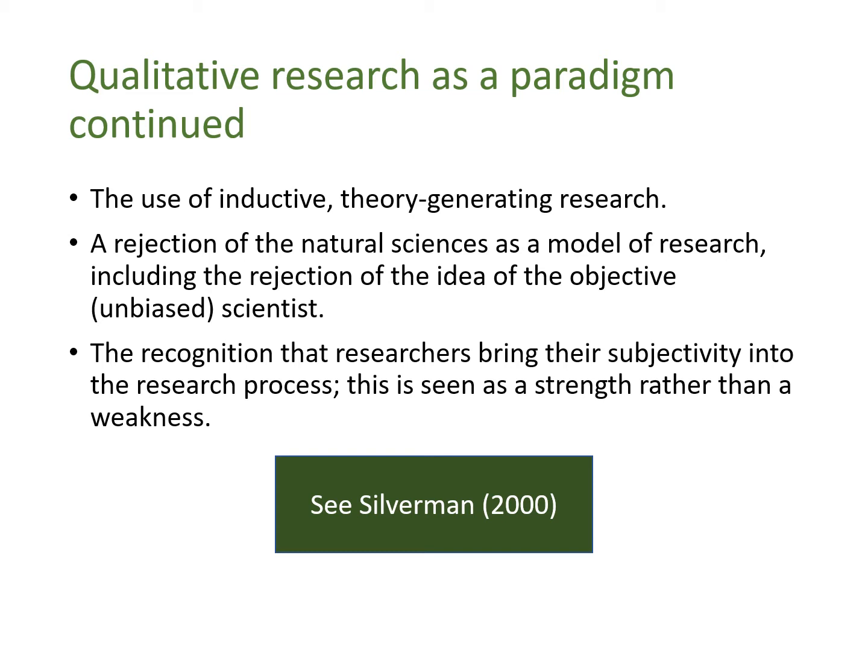Related to this is the recognition that researchers bring their subjectivity into the research process — their values, perspectives, frameworks for making sense of the world, their politics, their passions. This is seen as a strength rather than a weakness. In a positivist or post-positivist framework, subjectivity would threaten the validity, objectivity and reliability of a study and would need to be controlled. In a Big Q paradigm, subjectivity is a strength — it's essential to doing qualitative research. These features were developed from Silverman 2000.